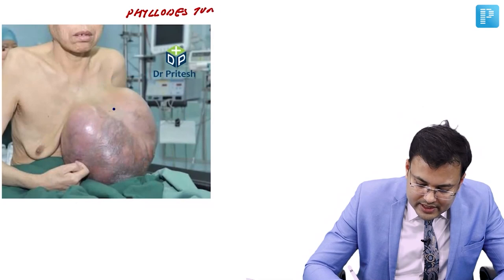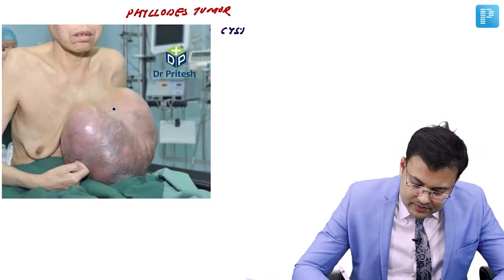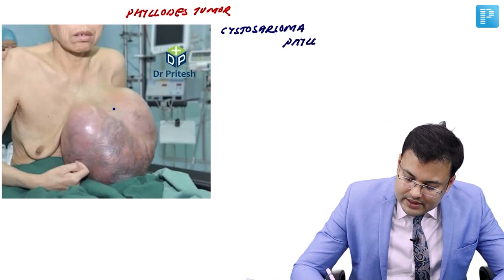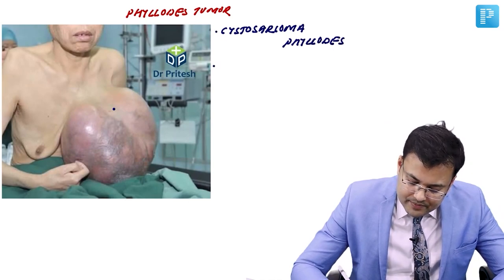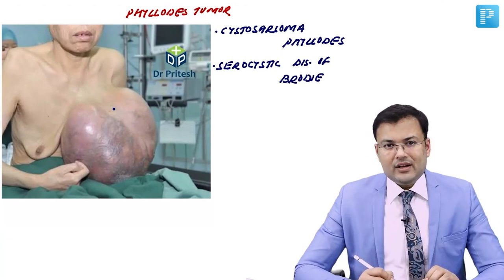The other names of phyllodes tumor are: cystosarcoma phyllodes and serocystic disease of Brody. How to remember? It's very easy — just break it down.